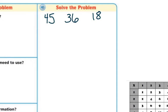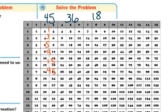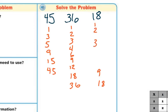How will I use the information? I can make a list to find all of the factors of 45, 36, and 18, then use that list to find the common factors. Factors of 45: 1 times 45, 3 times 15, and 5 times 9. You can use the multiplication chart if you want. Factors of 36: 1 times 36, 2 times 18, 3 times 12, 4 times 9, and 6 times 6. Factors of 18: 1 times 18, 2 times 9, and 3 times 6.